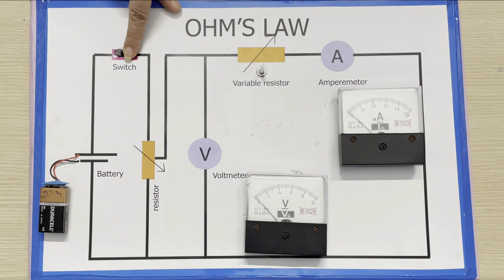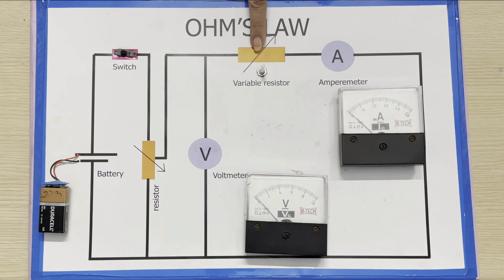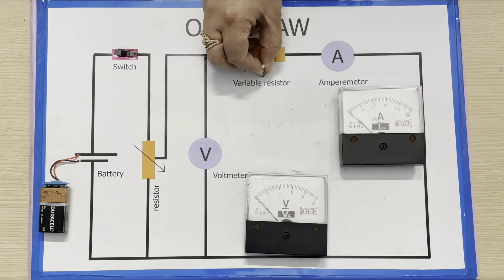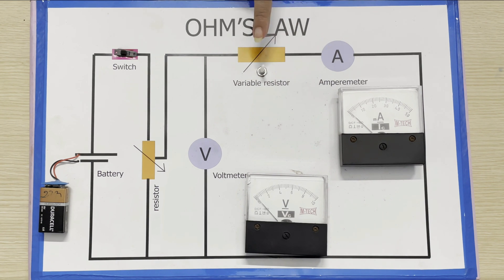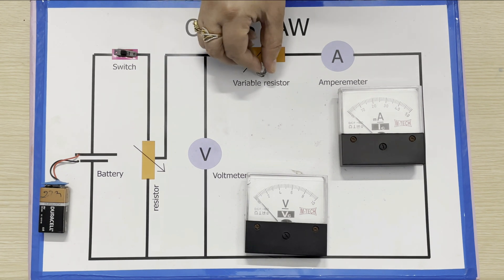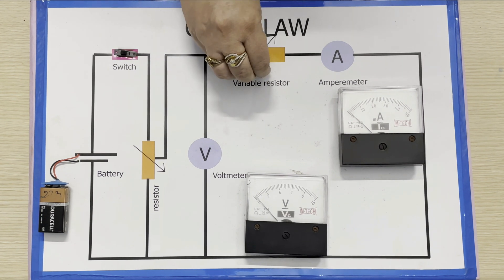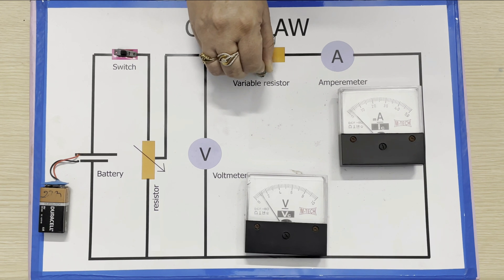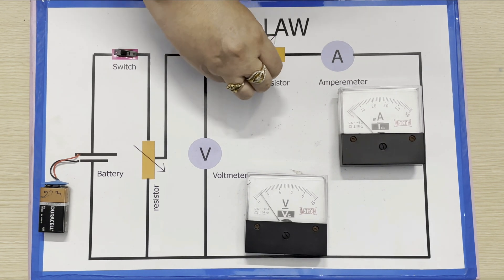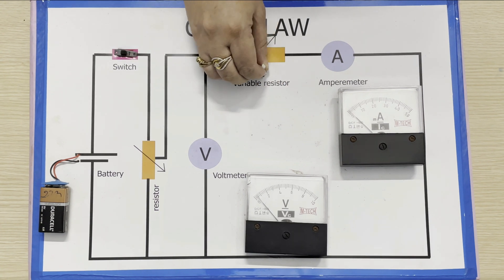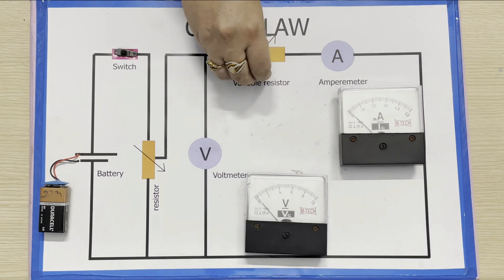As I close this switch, current flows in the circuit. The rheostat is adjusted to get the minimum reading in ammeter A and voltmeter V. The ammeter reading I and voltmeter reading V are noted. We will start with zero reading — the minimum reading in voltmeter and ammeter — and note it as our first reading.